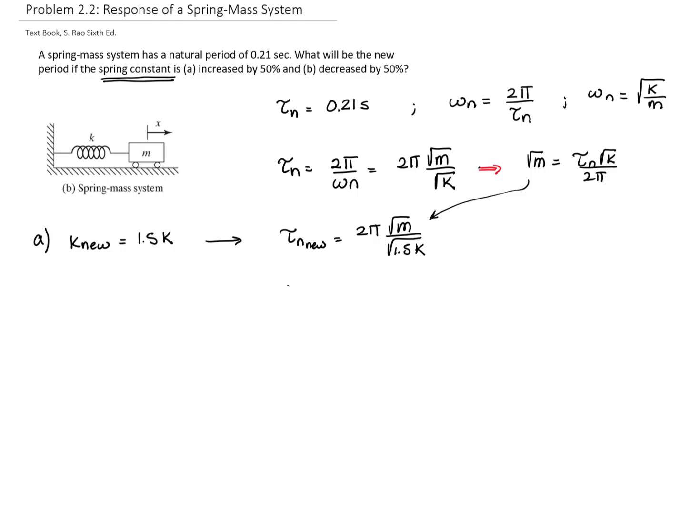So that will be that the new period will be 2π, the original period times K divided by 2π, and this all divided also by 1.5K. So here I can cancel out 2π, and I can also cancel out the K.